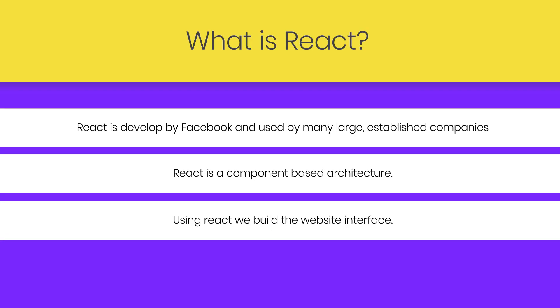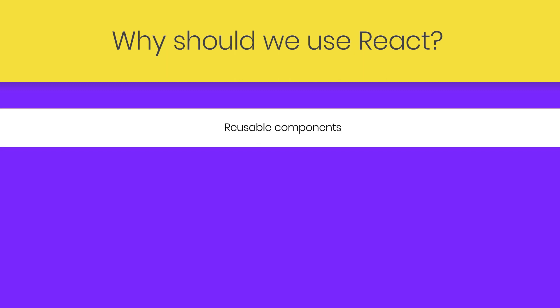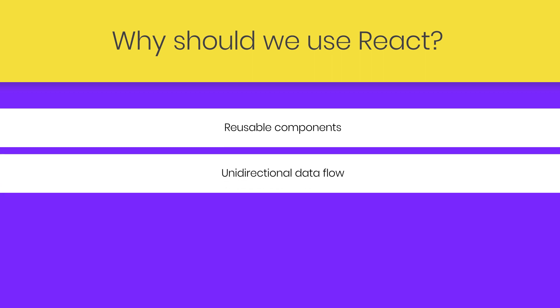Using React we build website interfaces. Why should we use React as a front-end? In React we create reusable components — components are the building blocks of any React application and a single app usually consists of multiple components, saving you a lot of time. React also has an important feature called unidirectional data flow, meaning when designing a React app developers often nest child components within parent components.